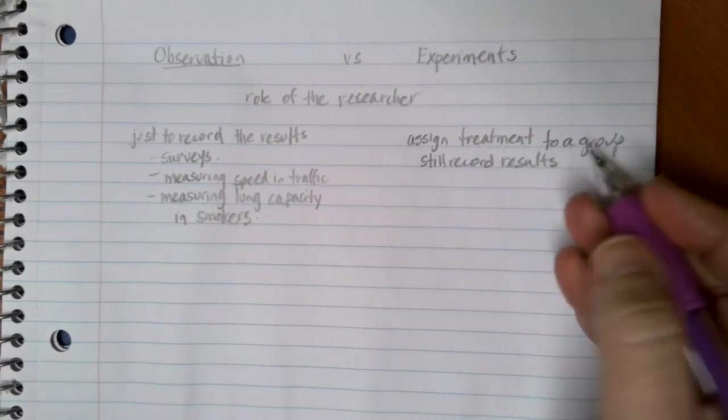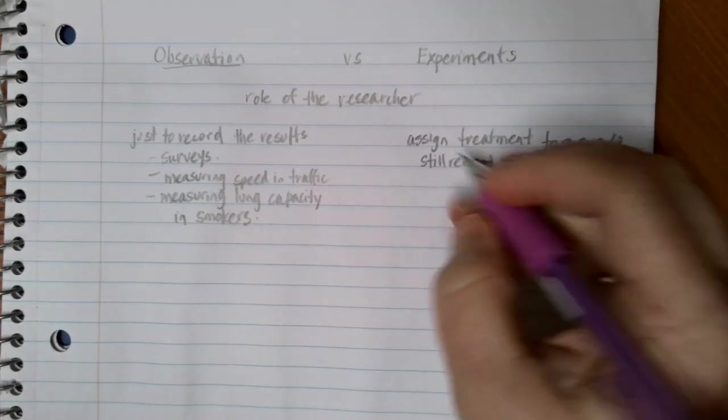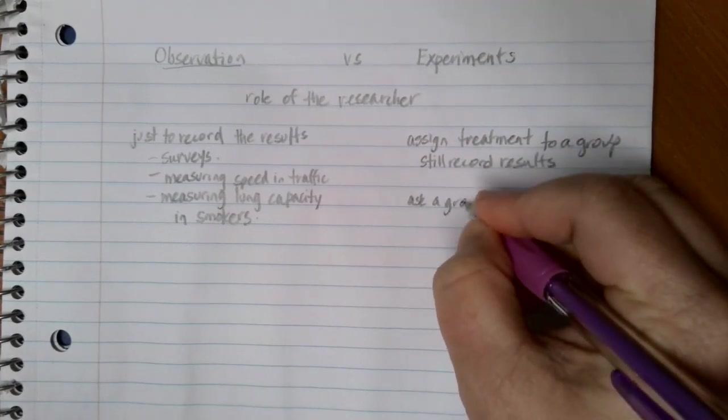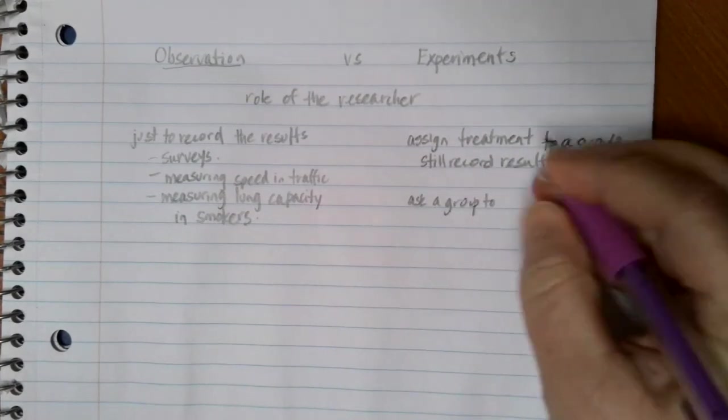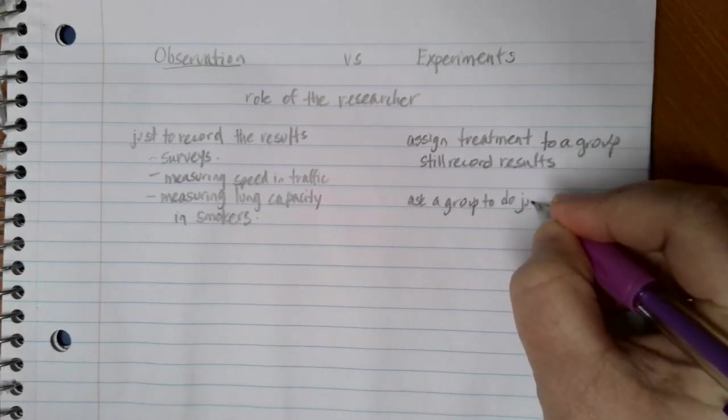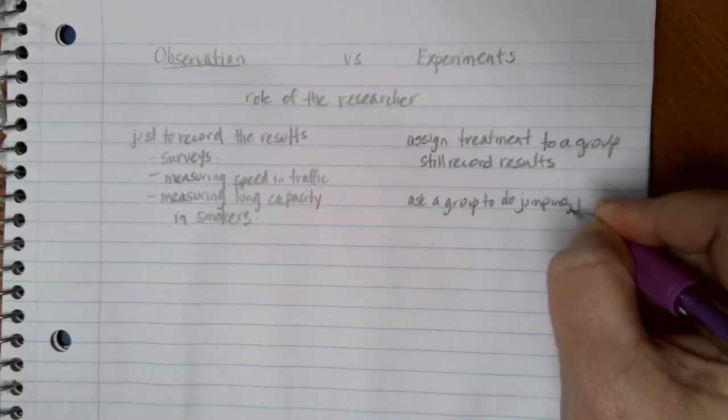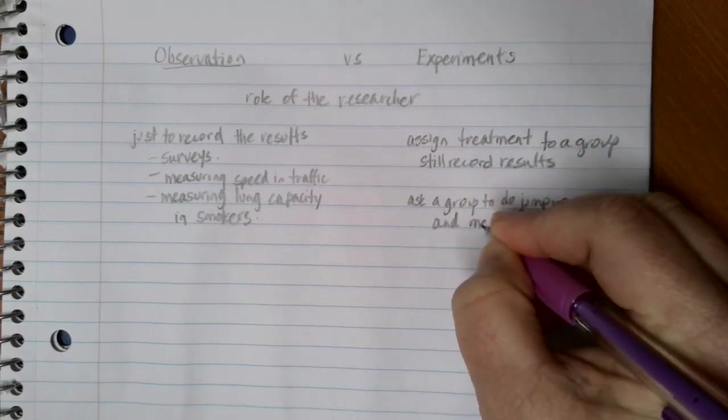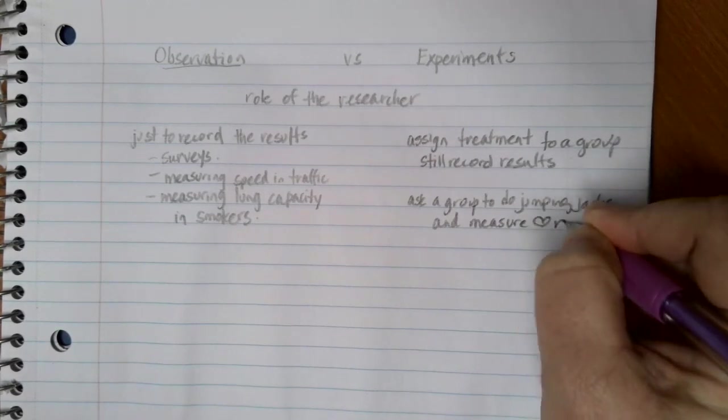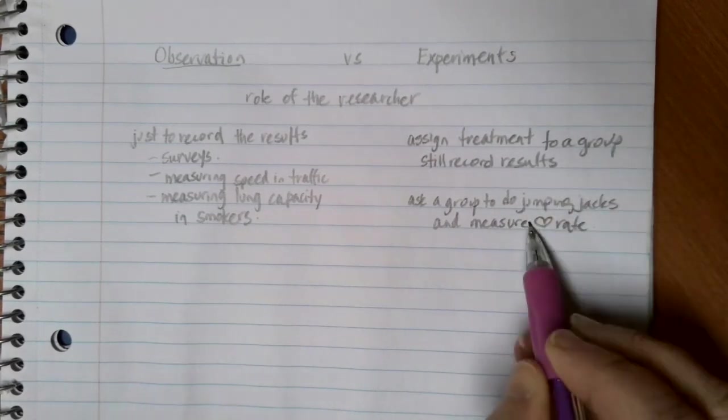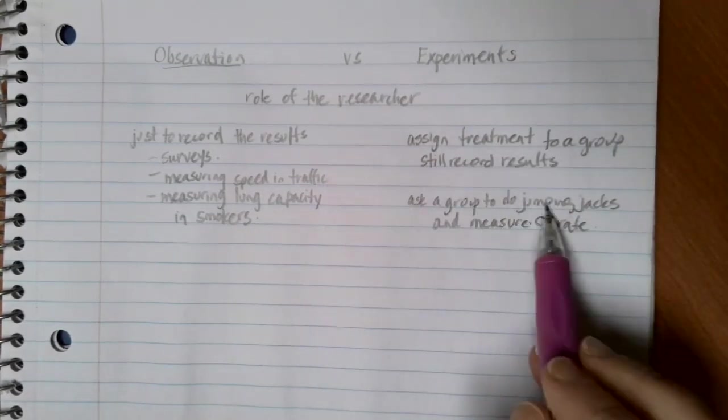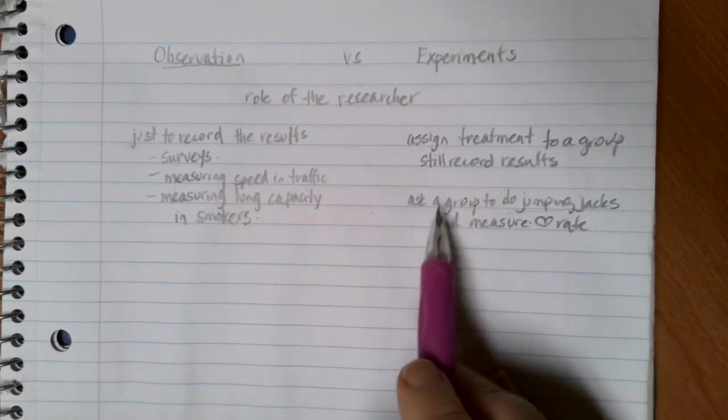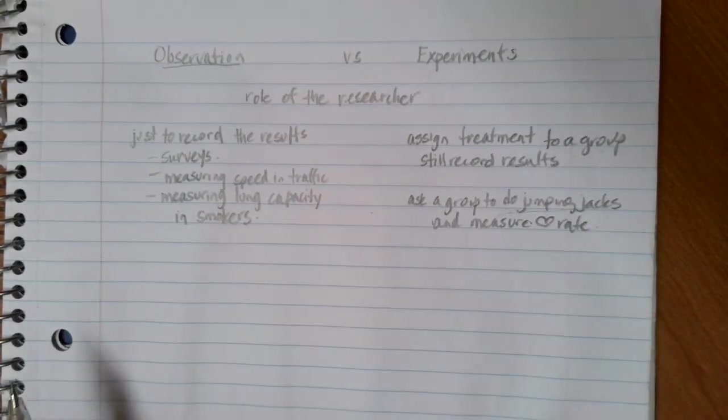So for example, for an experiment, you might ask a group to do jumping jacks and then measure their heart rate. In an example like this, the researcher has assigned a group something to do. This group is going to do jumping jacks and then we're going to do a measurement.